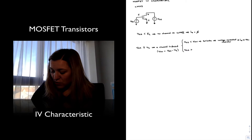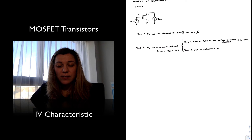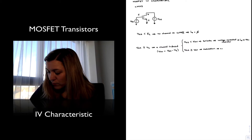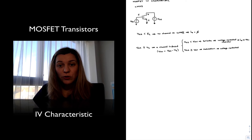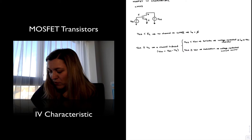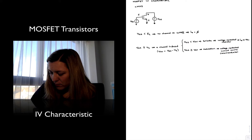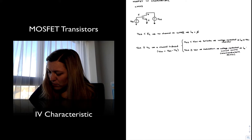As soon as VDS reaches the overdrive voltage or increases beyond it, we enter the saturation region, where the transistor behaves as a voltage-controlled current source. The current is constant for increases in the load voltage, and the amount of current depends only on the input voltage. We have another name for that type of device — we call it a transconductance device or transconductance amplifier. Basically, ID is dependent on VGS as opposed to VDS.